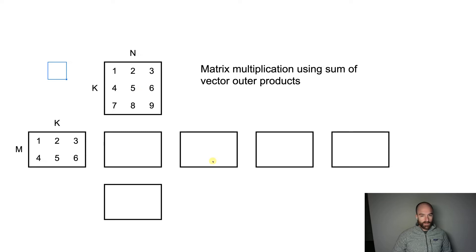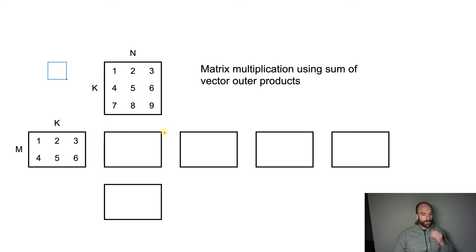These other boxes will come later. First we're going to do an ordinary matrix multiplication of these two matrices. It's standard practice to label the number of rows as M, the number of columns as N, and the number of shared elements in the inner dimension as K. So the output matrix will have M rows and N columns — in this case two rows and three columns.